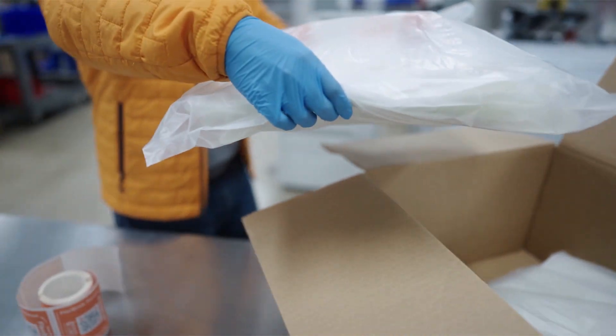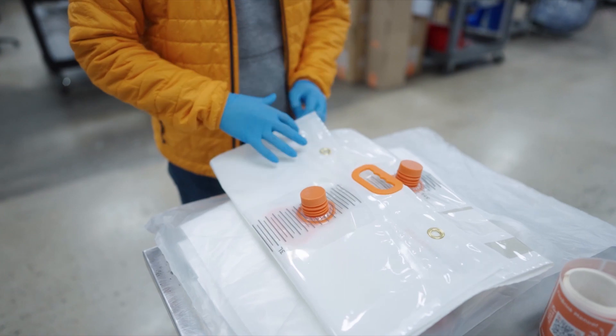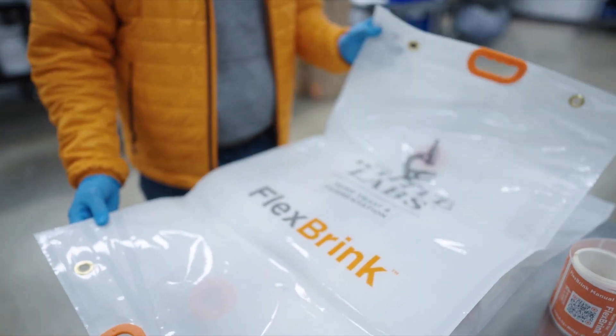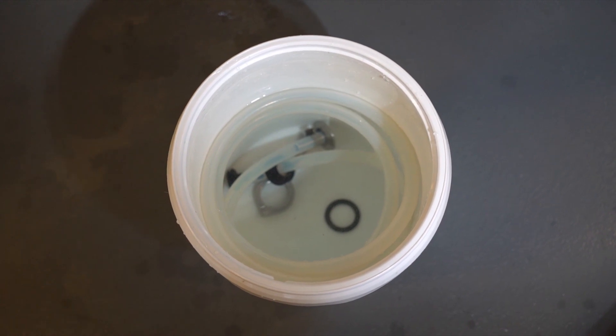Unlike traditional brinks, the Flexbrink has been sterilized using gamma irradiation so it's ready to use right out of the box. It is still key to sanitize parts that may come in contact with yeast.